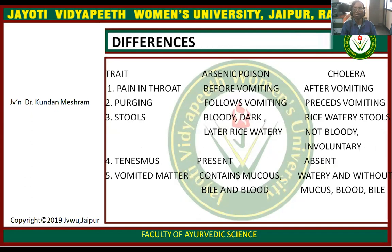Difference between arsenic poisoning and cholera: in arsenic, pain in throat occurs before vomiting; in cholera, vomiting comes first. In arsenic poisoning, purging follows vomiting; while in cholera, vomiting follows purging. Stools in arsenic poisoning are bloody, dark, and later rice watery; while in cholera, stools are rice watery, not bloody, and involuntary. Tenesmus is present in arsenic poisoning but absent in cholera. Vomited matter contains mucus, bile, and blood in arsenic poisoning; while in cholera, the vomited matter is watery and without mucus, blood, or poison.